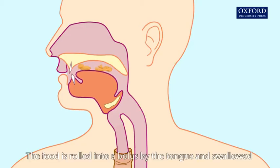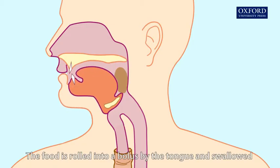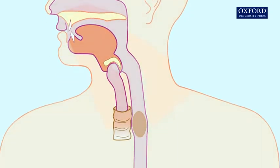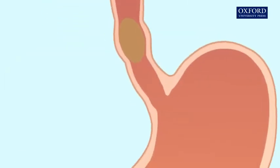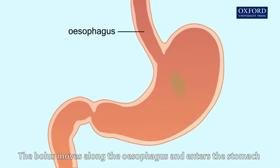The food is rolled into a bolus by the tongue and swallowed. The bolus moves along the esophagus and enters the stomach.